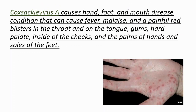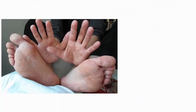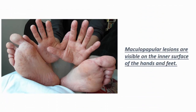The first and most important condition caused by Coxsackie virus A is hand, foot and mouth disease, which can cause fever, malaise, and painful red blisters in the throat and on the tongue, gums, hard palate, inside of the cheeks, and palms of the hands and soles of the feet. Maculopapular lesions are visible on the inner surface of the hands and feet. Note that secondary syphilis and rickettsia can also cause this type of rash.